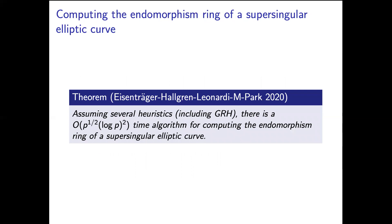So I want to talk about an algorithm with Eisenträger, Hallgren, Leonardi, and Park for computing the endomorphism ring of a supersingular elliptic curve, which assuming several heuristics including but not limited to the generalized Riemann hypothesis, has runtime p^(1/2) × (log p)^2.